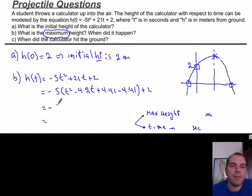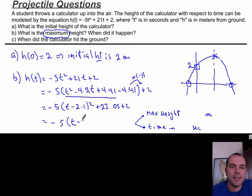We know that I can get a perfect square from these three guys, and that would be t minus 2.1, and this comes out, gets multiplied by minus 5, and I get 22.05. The minus and the minus gives me a plus, and then we add 2. So, finally, we got minus 5 times t minus 2.1 squared plus 24.05.